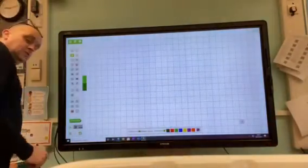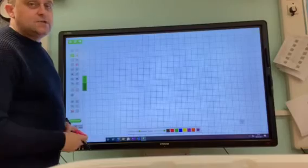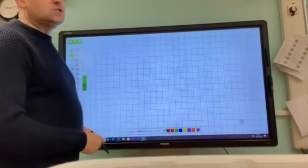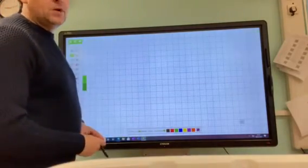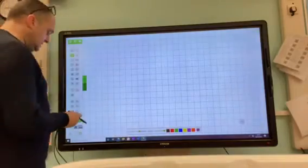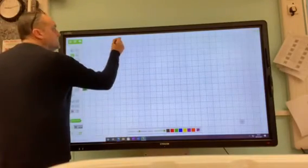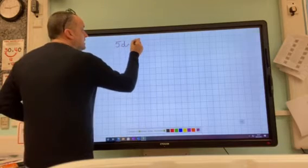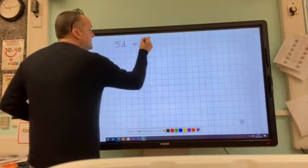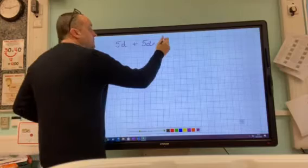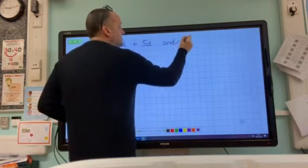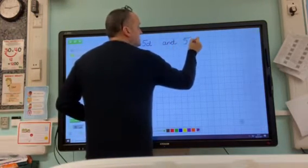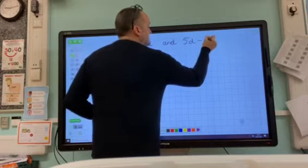Okay, morning Year Six, how are we doing? We are going to do two lots of maths today. We're going to do addition and subtraction of five-digit numbers. Okay, so they're big numbers. Let's start with a title, so title is 5d + 5d and 5d - 5d, addition and subtraction of five digits.